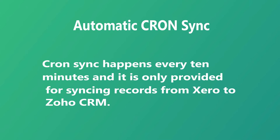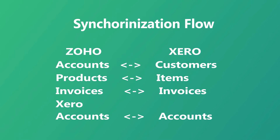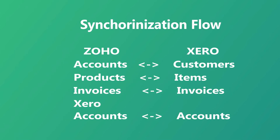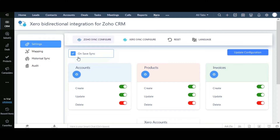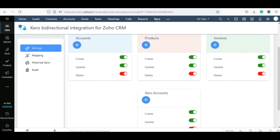We will see them one by one in this video. But first, let's see the flow of synchronization. The accounts of Zoho will be synced as customers in Xero. The products of Zoho are synced as items in Xero. The invoices of Zoho are synced as invoices in Xero, and the Xero accounts in Zoho will be synced as accounts in Xero. This extension supports record sync of modules like accounts, products, invoices, and Xero accounts.